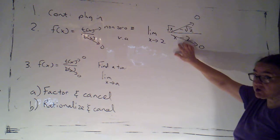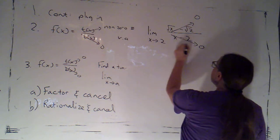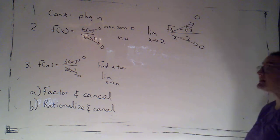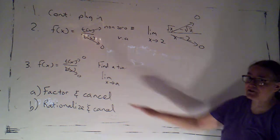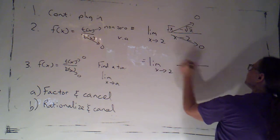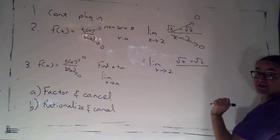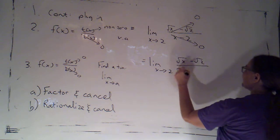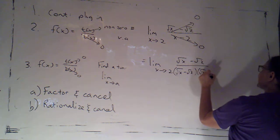So I'm hoping that I can somehow cancel something. One thing I could do that is a perfectly legitimate option is I could view x minus 2 as a difference of 2 squares. This would be actually going with the factor and cancel method. I could say this is the limit as x goes to 2 of root x minus root 2. x is root x squared and 2 is root 2 squared. So I could say it's root x minus root 2 times root x plus root 2.